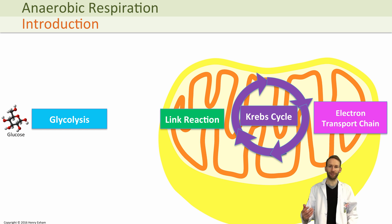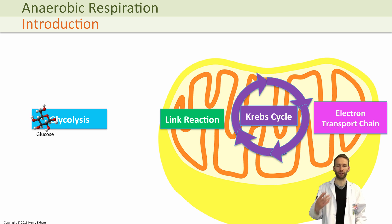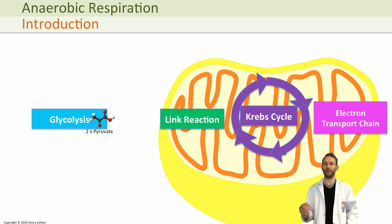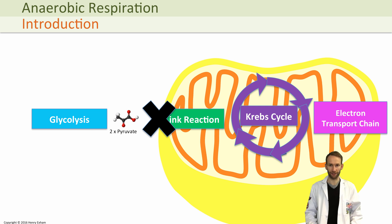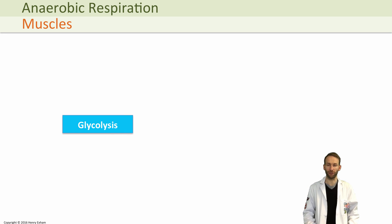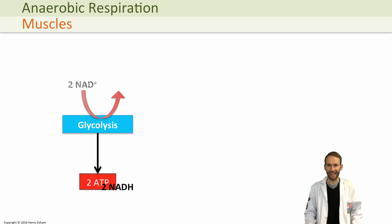Let's look at what happens in anaerobic respiration in the pathway. At this point in respiration, the glucose has gone through the process of glycolysis. It can't continue any further into the link reaction because there is no oxygen present. But don't forget that in glycolysis, you've already made two ATP molecules and two lots of NAD are reduced to NADH.